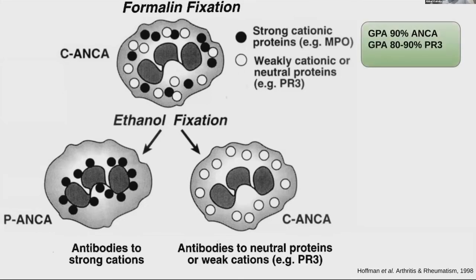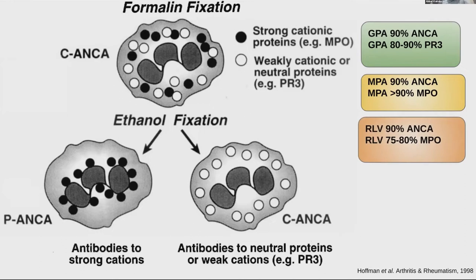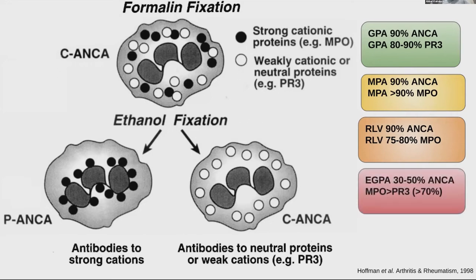We know that 90% of GPA patients have ANCA positivity by IF, and up to 90% are PR3 positive on direct antigen testing. In MPA, about 90% have ANCA and more than 90% have MPO. In renal limited vasculitis, 90% are ANCA positive and up to 80% have MPO. In EGPA, up to 30 to 50% are ANCA positive, most commonly MPO.